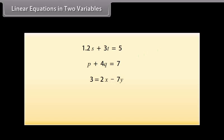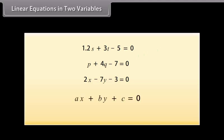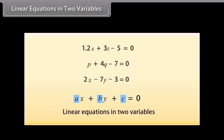We can put these equations in the form: 1.2S plus 3T minus 5 is equal to 0; P plus 4Q minus 7 is equal to 0; and 2X minus 7Y minus 3 is equal to 0 respectively. So any equation which can be put in the form AX plus BY plus C is equal to 0, where A, B, and C are real numbers and A and B are not both zero, is called a linear equation in two variables.